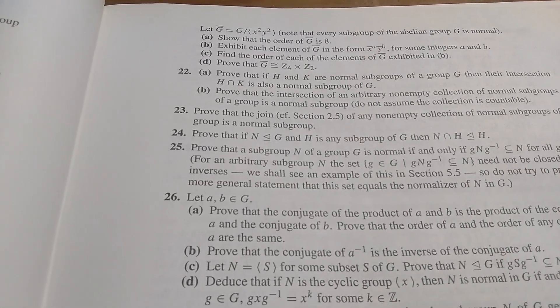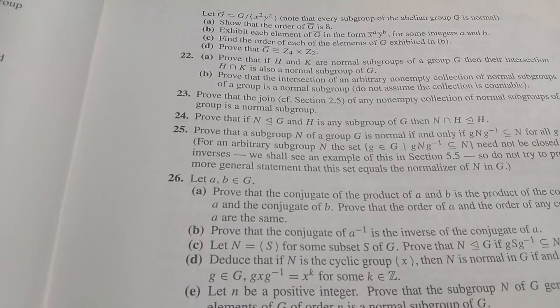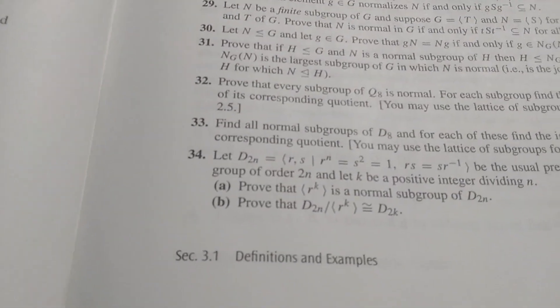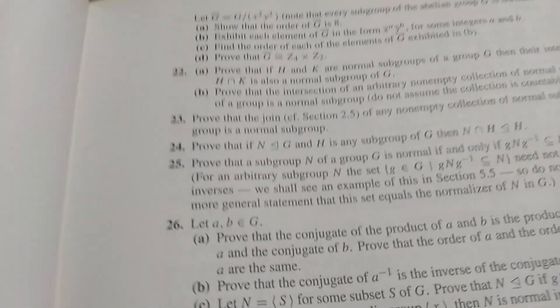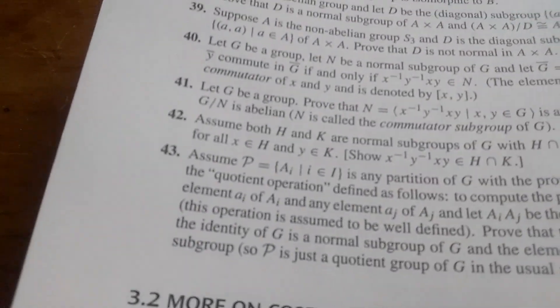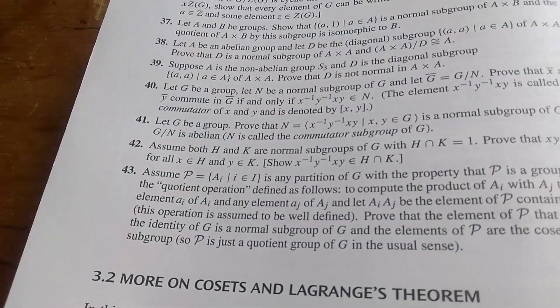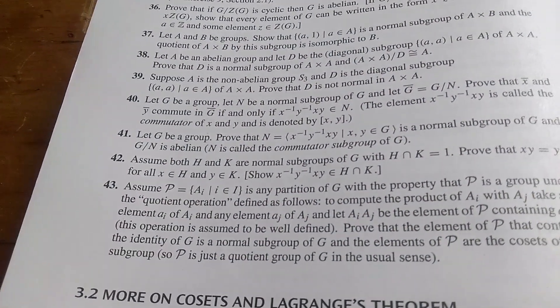Dummit and Foote has tons of problems. Tons. Each section has a lot of problems. I mean, this is section 3.1. We're already up to 34. I think that's it. Let me turn the page. Nope. 43. So ridiculous. There are so many exercises. So if you're looking for practice, there is no shortage of that in this book.